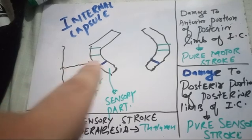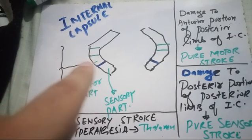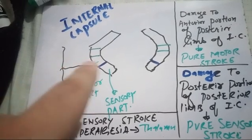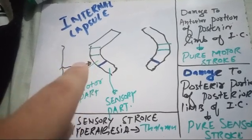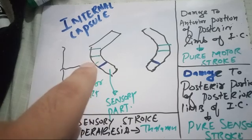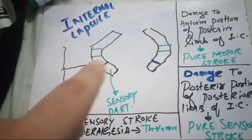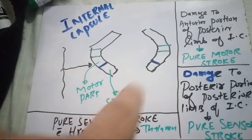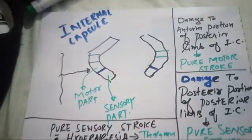The internal capsule gets its blood supply from the middle cerebral artery. So an MCA stroke will cause damage to the posterior limb of internal capsule.